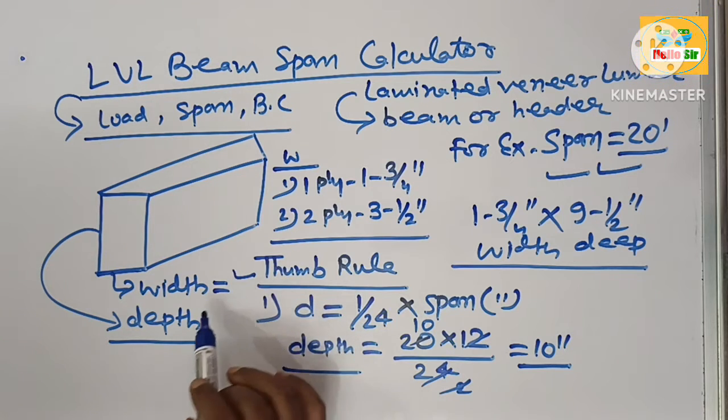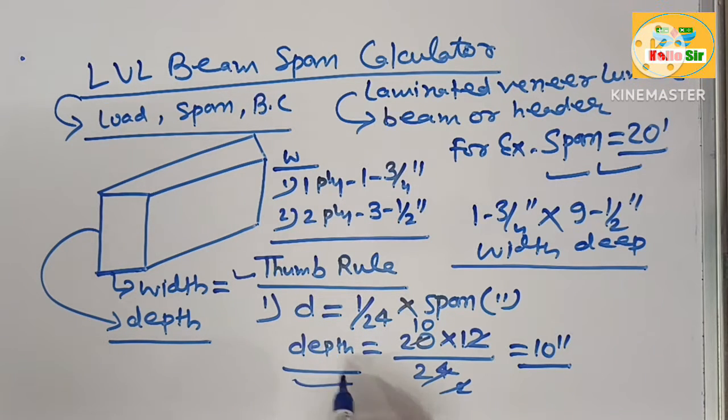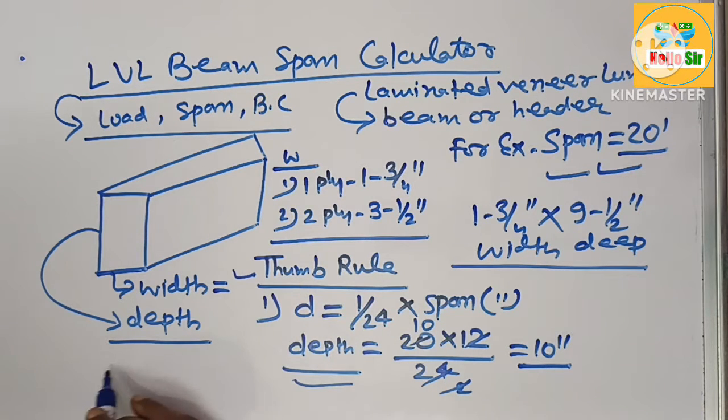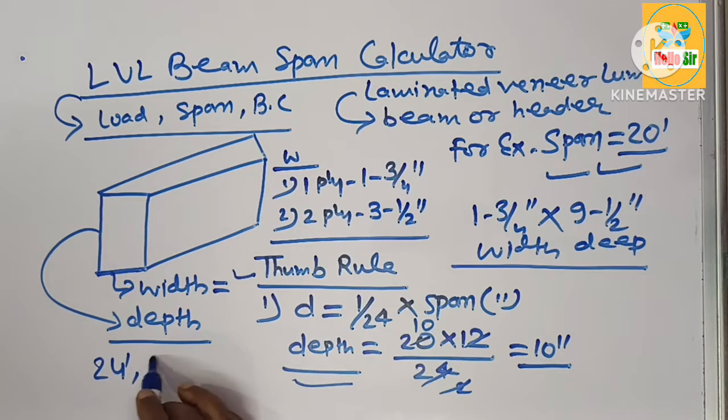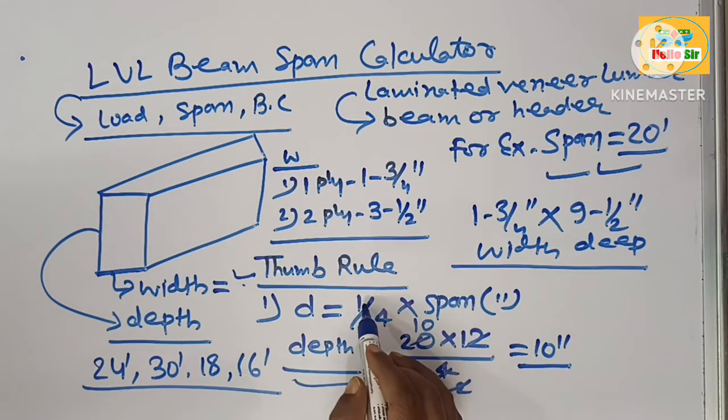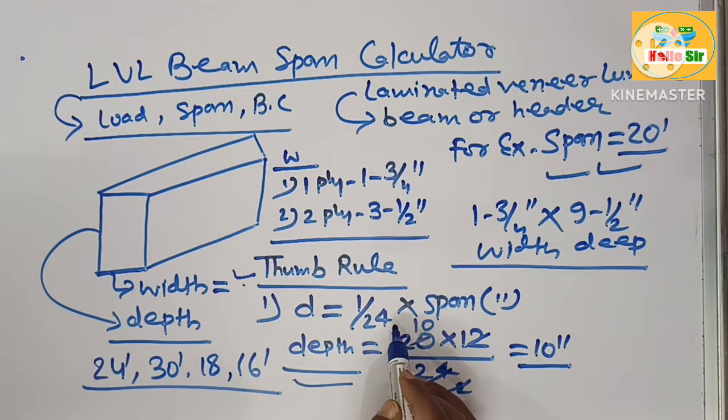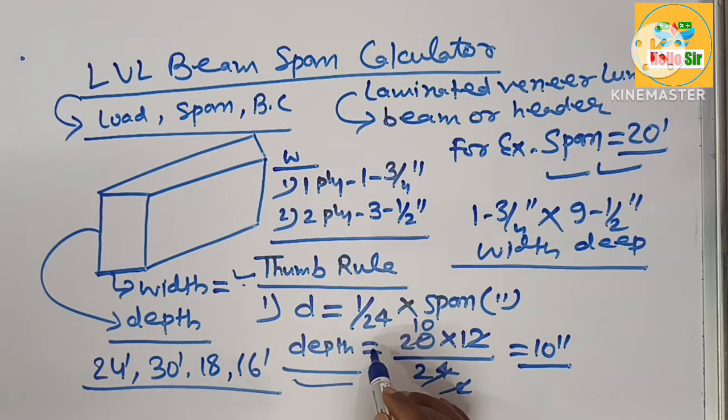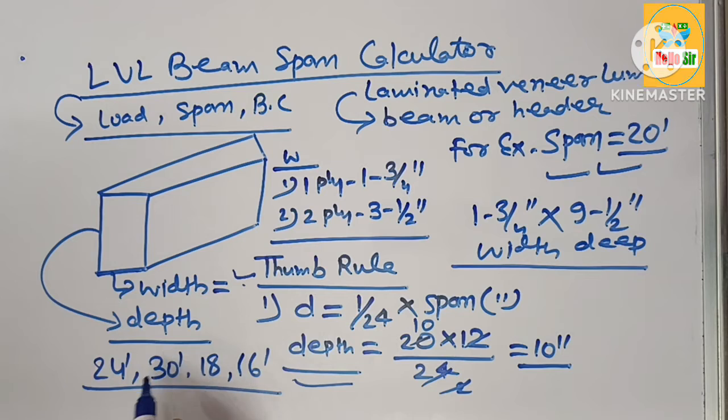By this thumb rule, you can find out the size for different spans like 24 feet, 30 feet, 18 feet, and 16 feet. Using the thumb rule of 1/24, you can find the correct LVL beam size for any specific span length.